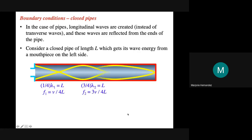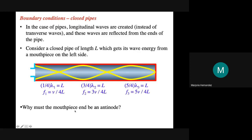For the third harmonic of the closed pipe, add one node and one antinode — the closed end remains a node and the open end remains an antinode. The length is equivalent to five-fourths of the wavelength, and plugging that into the wave speed equation gives 5V over 4L. Why must the mouthpiece end be an antinode? Because that is the source. Why must the closed end be a node? Because there's no displacement there.